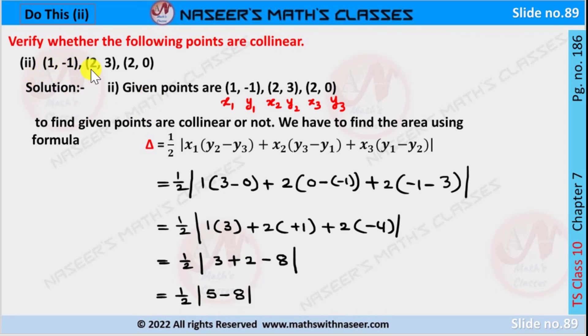The given points are (1, -1), (2, 3), and (2, 0). Let these point coordinates be x₁,y₁ as 1,-1, x₂,y₂ are 2,3, and x₃,y₃ are 2,0.